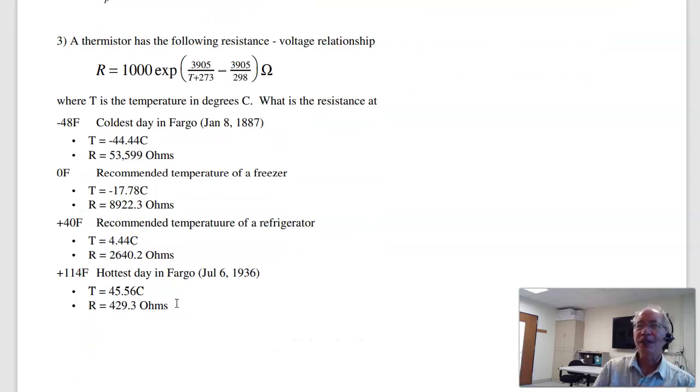Problem three. If you have a thermistor with this relationship, find the resistance at minus 48 Fahrenheit, convert to Celsius, solve it's 53 kilo ohms, at 0 Fahrenheit, the temperature of a freezer, 8.9 kilo ohms, the temperature of the refrigerator, 2.6 kilo ohms, hottest day in Fargo, 429 ohms. Basically, if I can measure resistance, I can tell you temperature. That's how thermometers work. At least, the modern ones do.